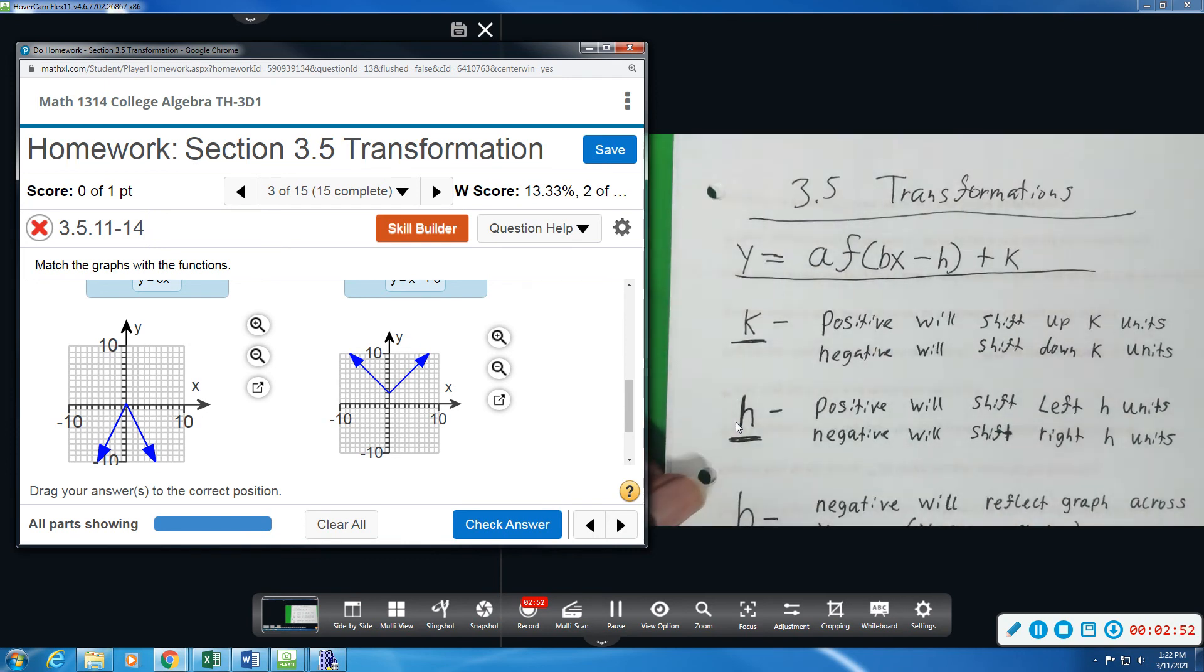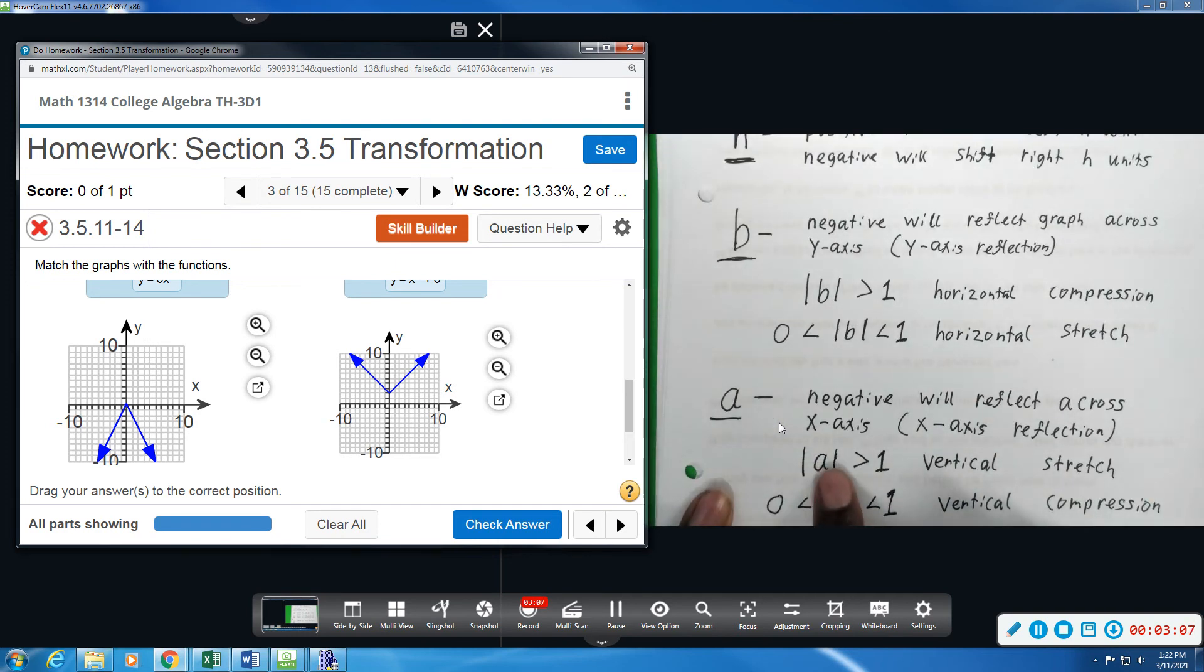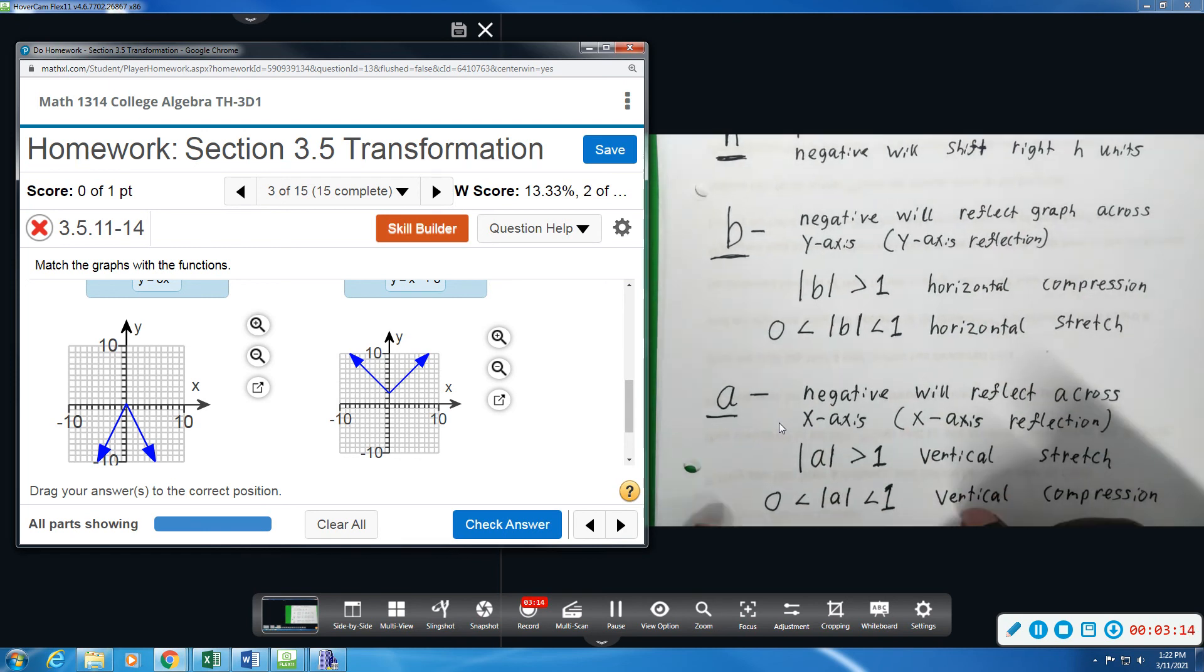And then I also want it to be negative because I notice instead of opening upward, this is opening downward. So that A value is going to be negative. That's why we put the absolute value.